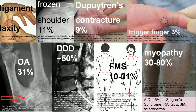Fibromyalgia syndrome, myopathy, muscle cramps, aching, and pain are also common. Very commonly, autoimmune diseases go hand in hand with Hashimoto's thyroiditis, such as Sjögren's, rheumatoid arthritis, lupus, juvenile idiopathic arthritis, and scleroderma. About 15% of patients with Hashimoto's thyroiditis will have another autoimmune disease.